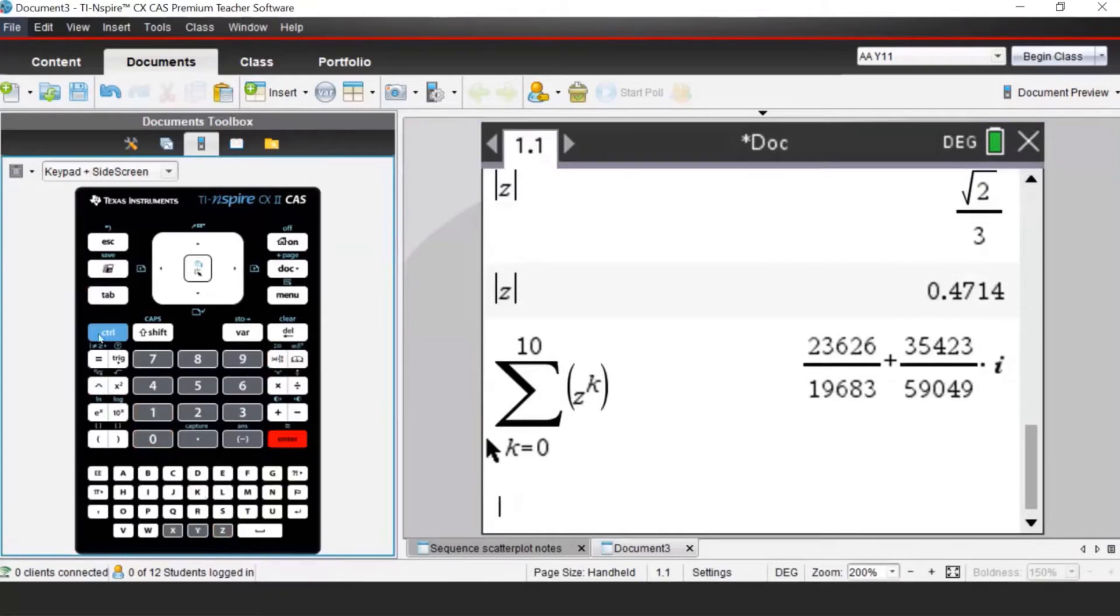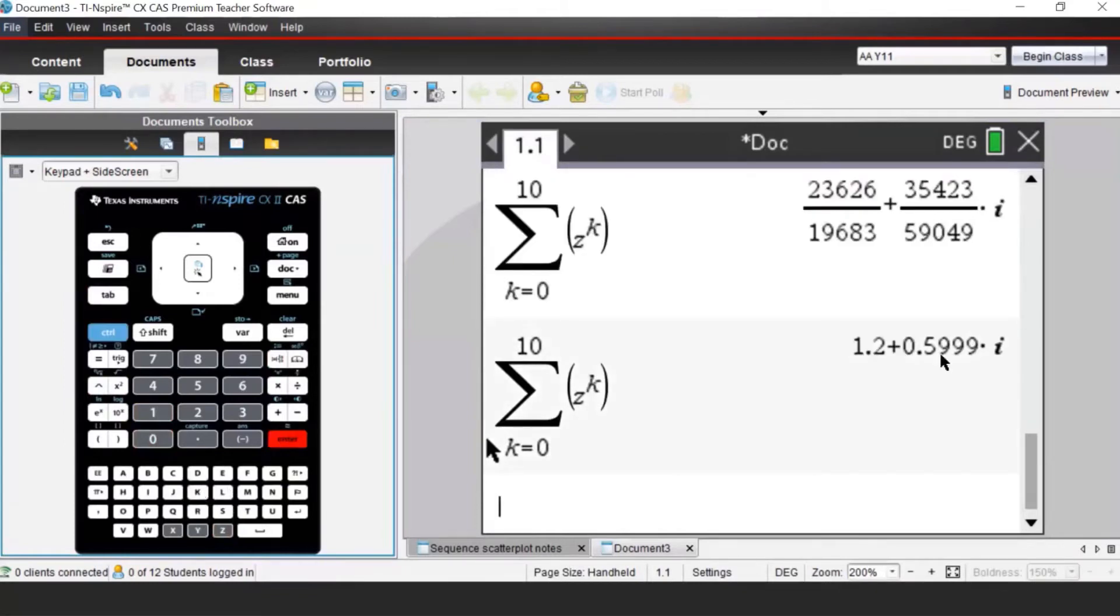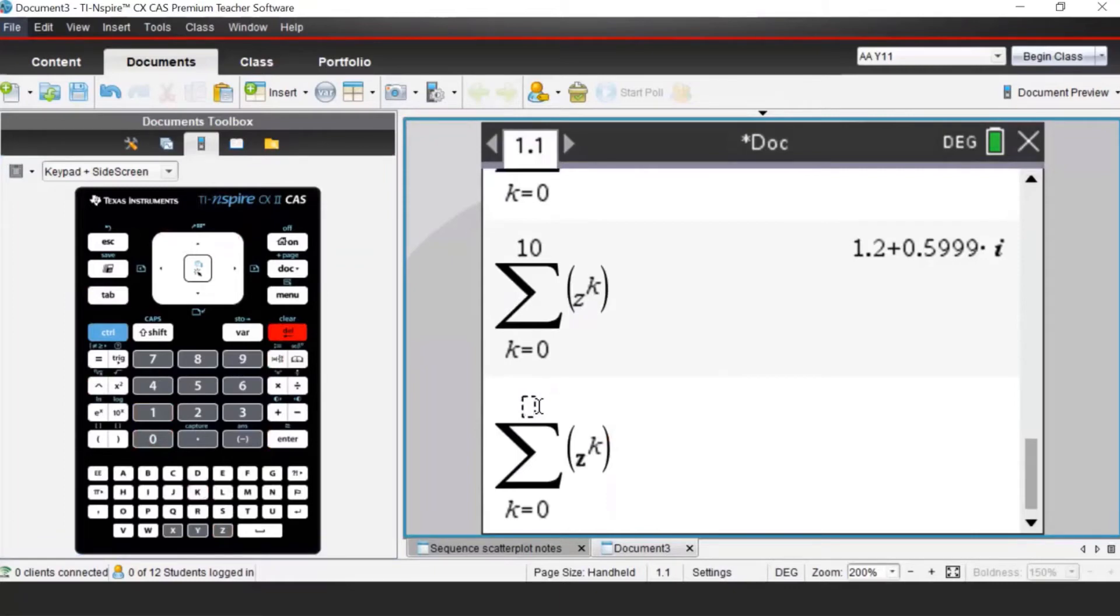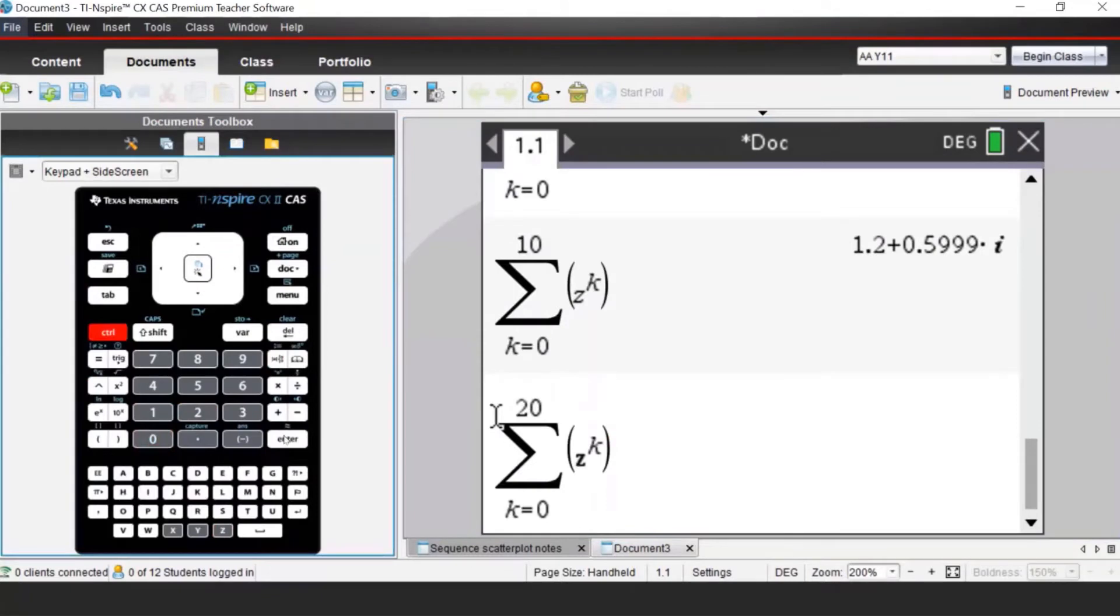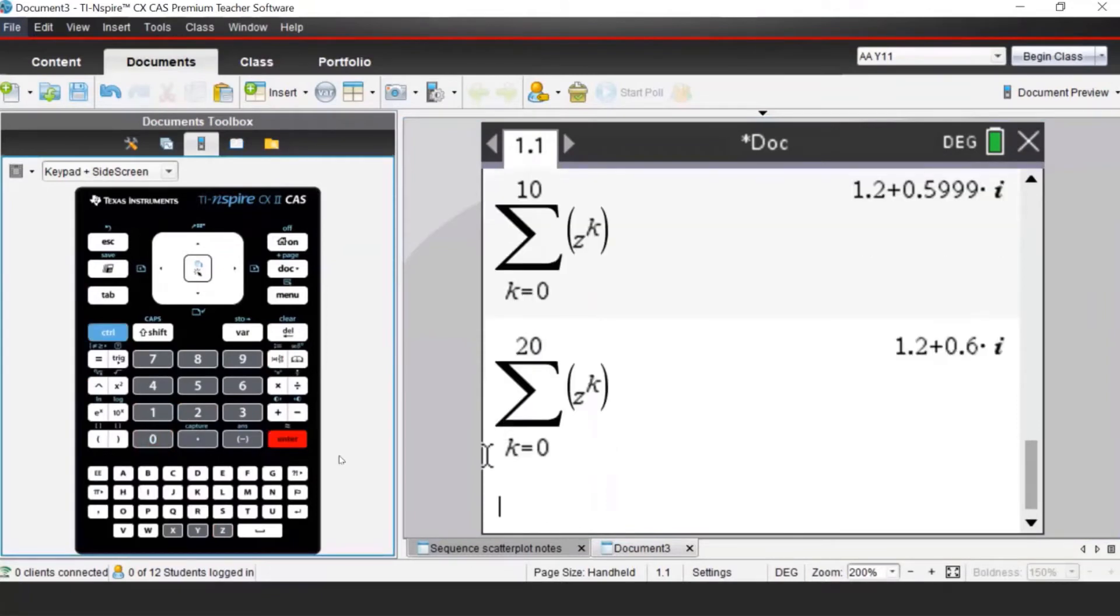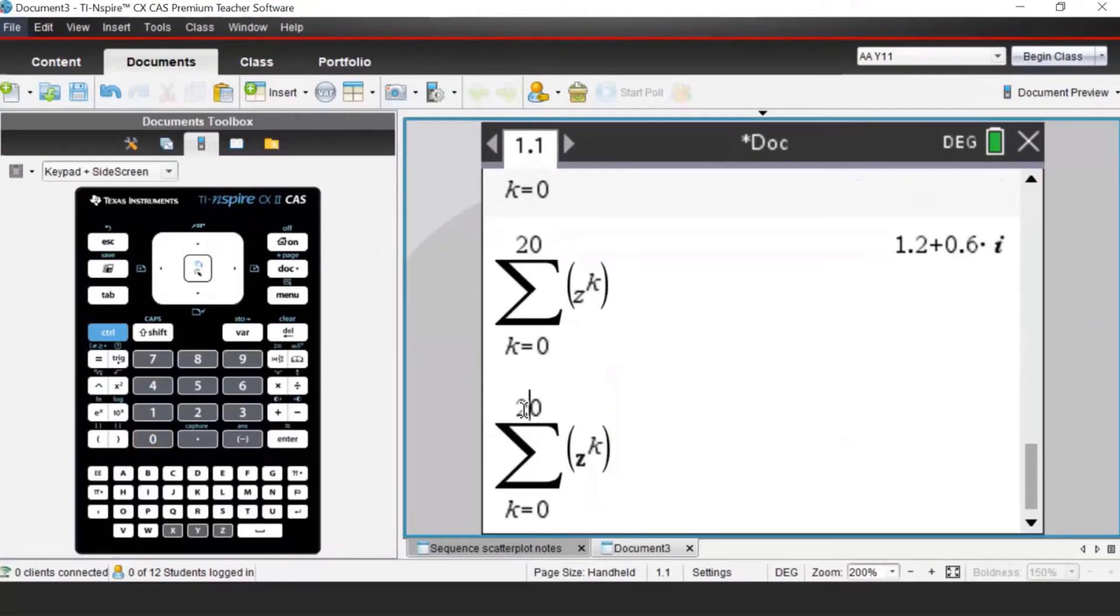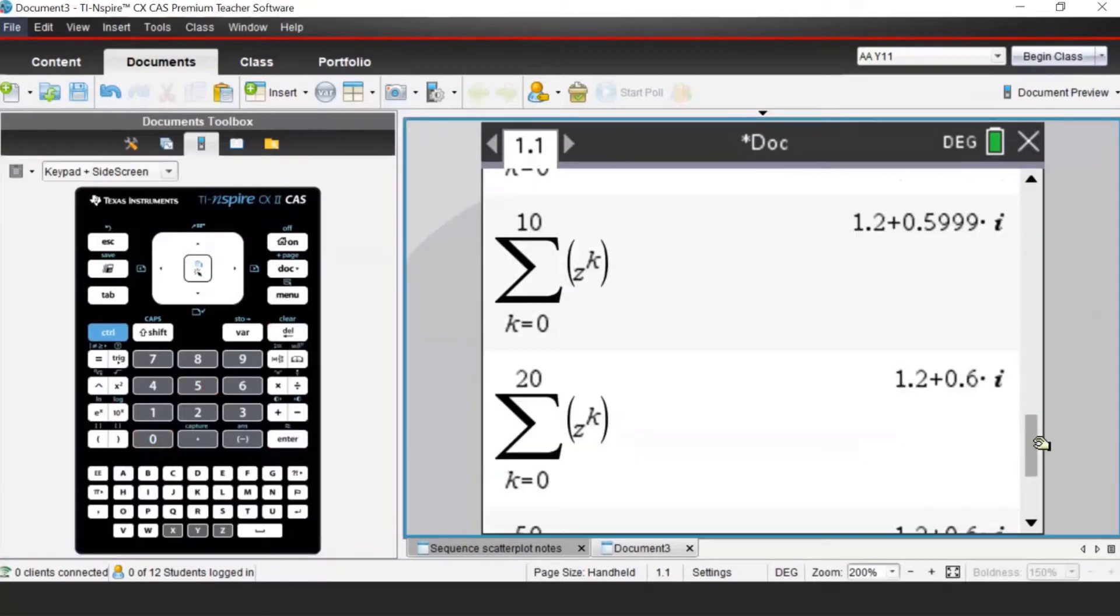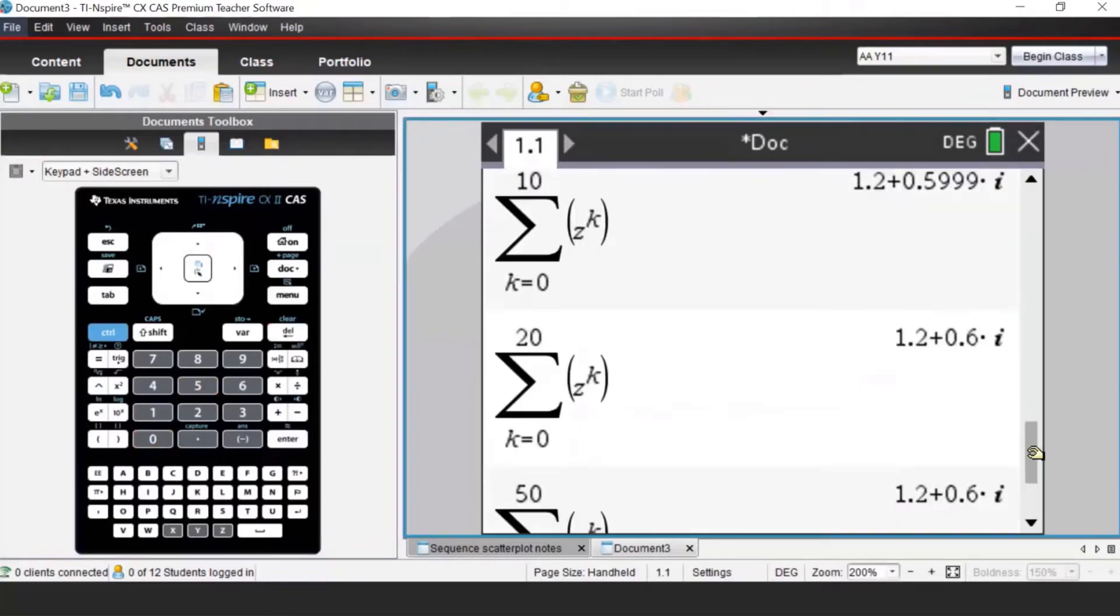Now if I try to use the sigma notation again, k 0 to 10, z to the power of k. I can find that as a decimal, and I can vary how many powers I'm using in the series. So if I go 20, and this time I go ctrl enter, that allows me to vary those powers. So this will be investigating the series. You will be able to see that there is some pattern occurring there as well.